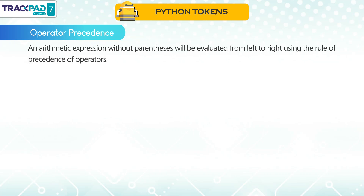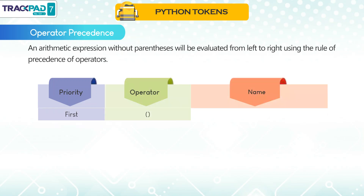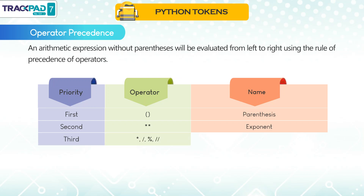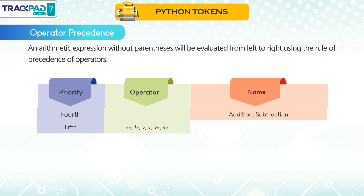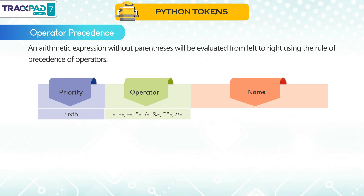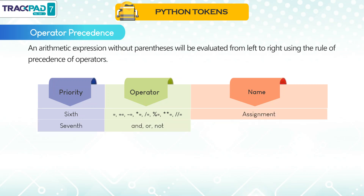Operator Precedence. An arithmetic expression without parentheses will be evaluated from left to right using the rule of precedence. Priority order: 1st — () Brackets/Parentheses; 2nd — ** Exponent; 3rd — *, /, %, // (Multiplication, Division, Modulo, Floor Division); 4th — +, - (Addition, Subtraction); 5th — ==, !=, >, <, >=, <= (Comparison); 6th — =, +=, -=, *=, /=, %=, **=, //= (Assignment); 7th — and, or, not (Logical).